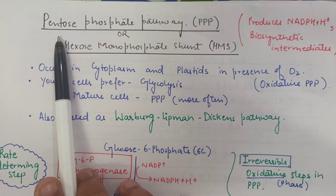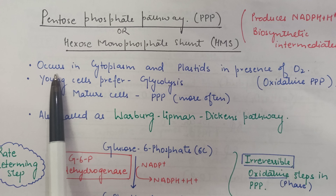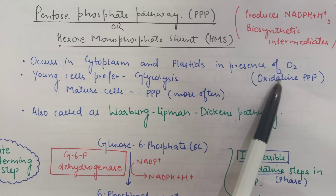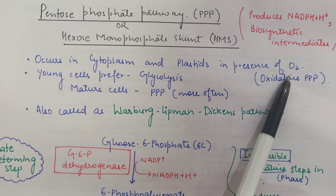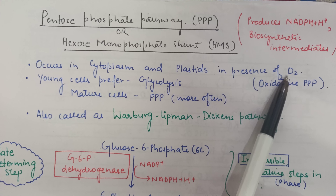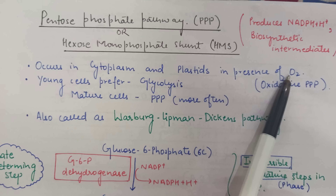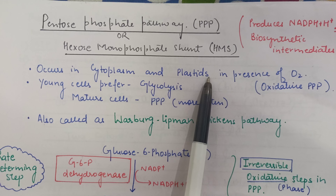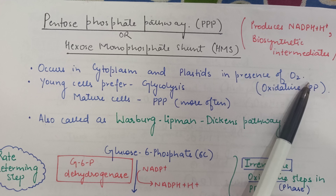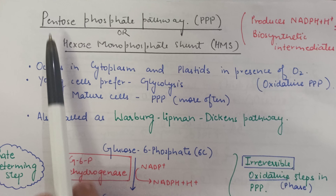The pentose phosphate pathway occurs in the cytoplasm and plastids in the presence of oxygen, because it is an oxidative, aerobic respiration. That's why this pathway is also called the oxidative pentose phosphate pathway.